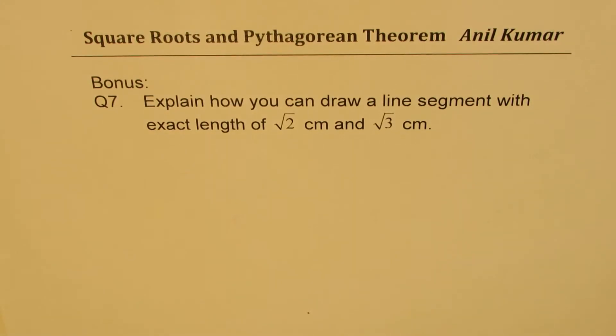I'm Anil Kumar sharing with you an excellent question based on square roots and Pythagorean theorem. Question number 7: Explain how you can draw a line segment with exact length of square root 2 cm and square root 3 cm.